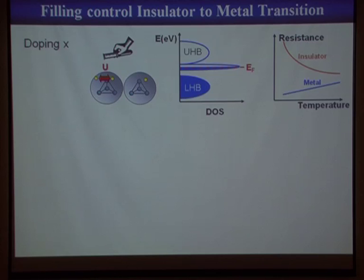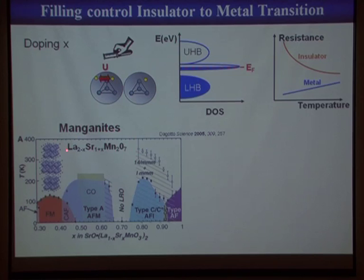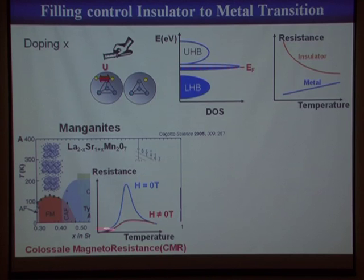There are very well-known systems that behave like this. The first is the manganite family — when you dope lanthanum manganites with strontium, you reveal a rich phase diagram with numerous new phases. The most famous is a ferromagnetic metallic phase. When you enter this phase, you have an insulator-to-metal transition, and applying a magnetic field greatly reduces the resistance — this is known as the colossal magnetoresistance effect.